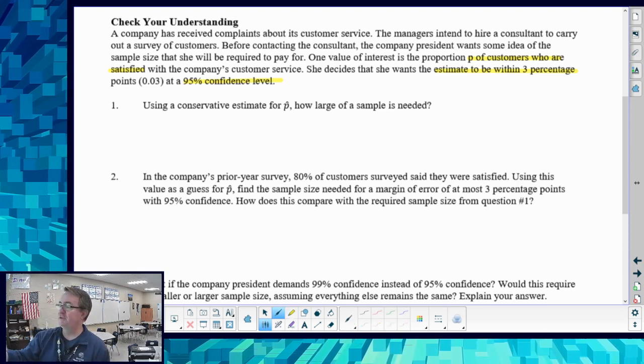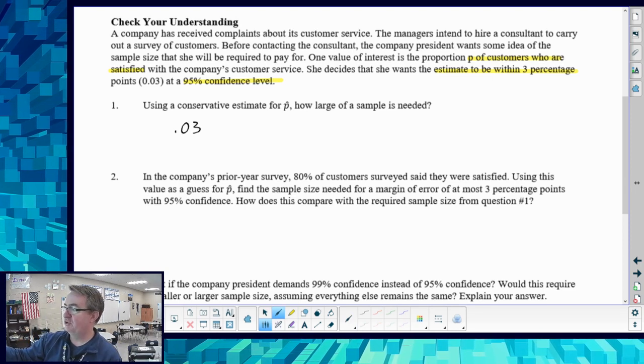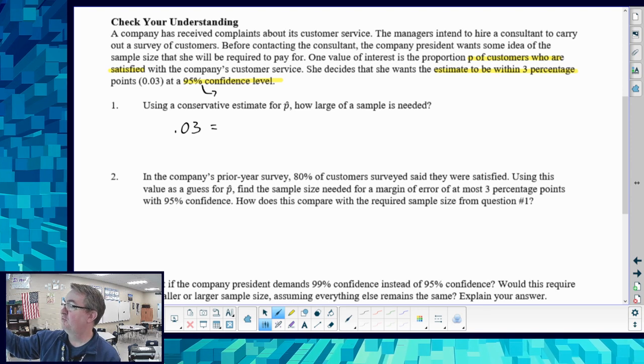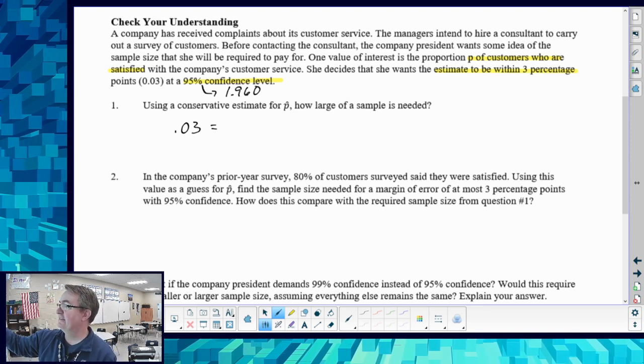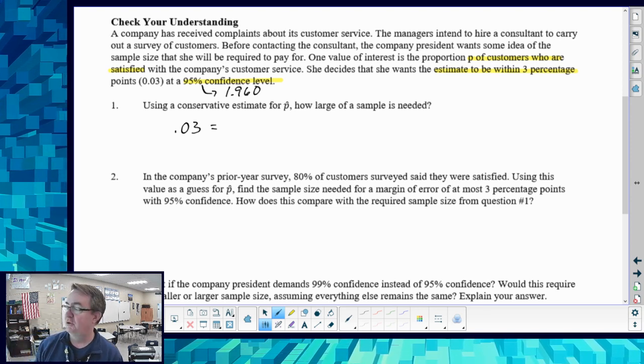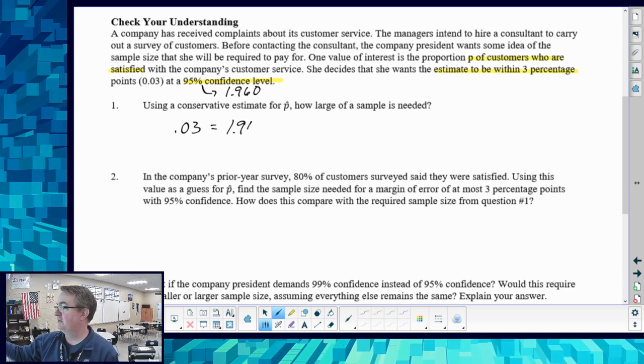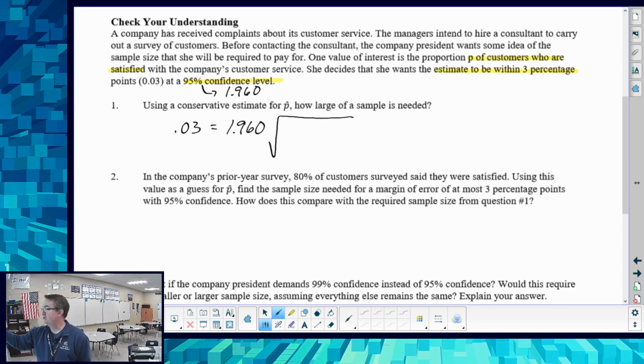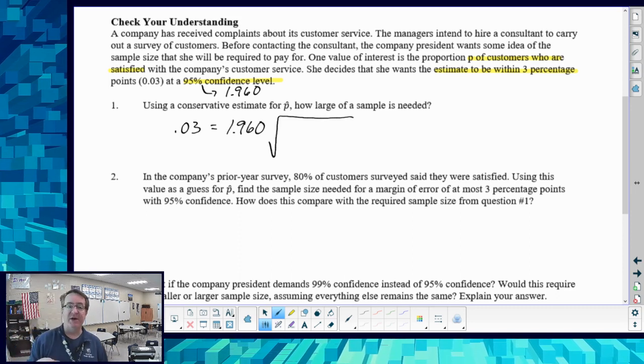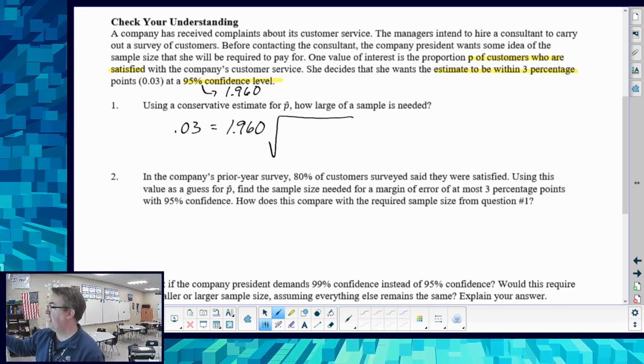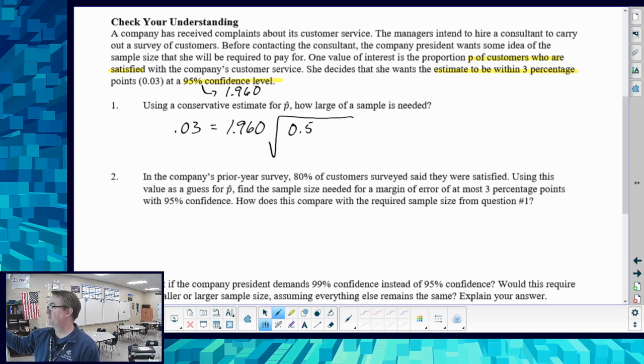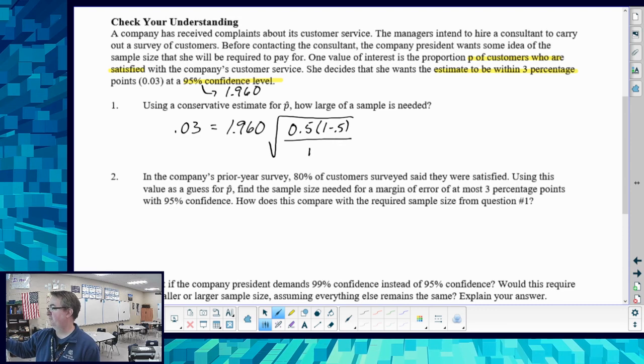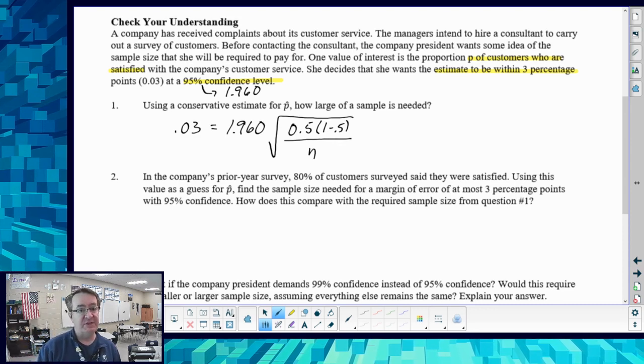So what we're going to do first is we want a 3% margin of error. Our margin of error at 95% is going to be 1.960 for a z star score. So I'm going to take 1.960 and multiply that by - now since we're doing conservative and we have no idea of how many customers are actually happy - we're going to go 50%, 1 minus 50% all over n. We're leaving n there because that's what we're solving for.